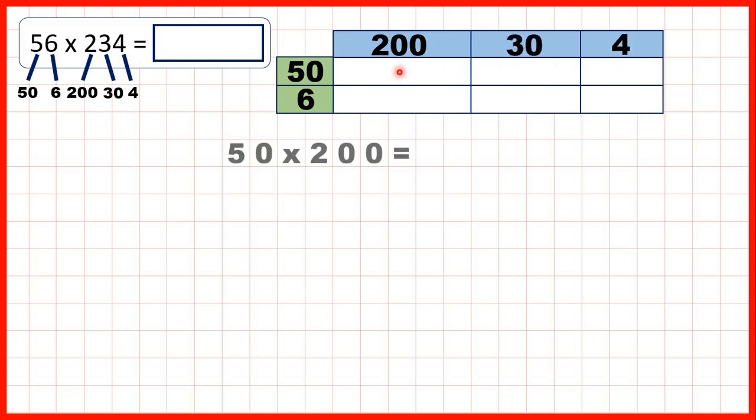So now for this box here we need to work out 50 times 200. That's 10,000 because 5 times 2 is 10. But then if we have three end zeros in a multiplication question, we need three end zeros in our answer.